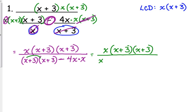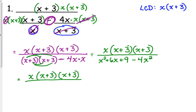So the denominator, when we multiply that out, we need to FOIL x plus 3 times x plus 3. So we get x squared plus 6x plus 9. And then that is minus 4x squared. 4x times x is 4x squared. Still leaving that numerator in factored form. I want to simplify the denominator. Well, first of all, I need to combine the x squared minus 4x squared. So that's negative 3x squared plus 6x plus 9.